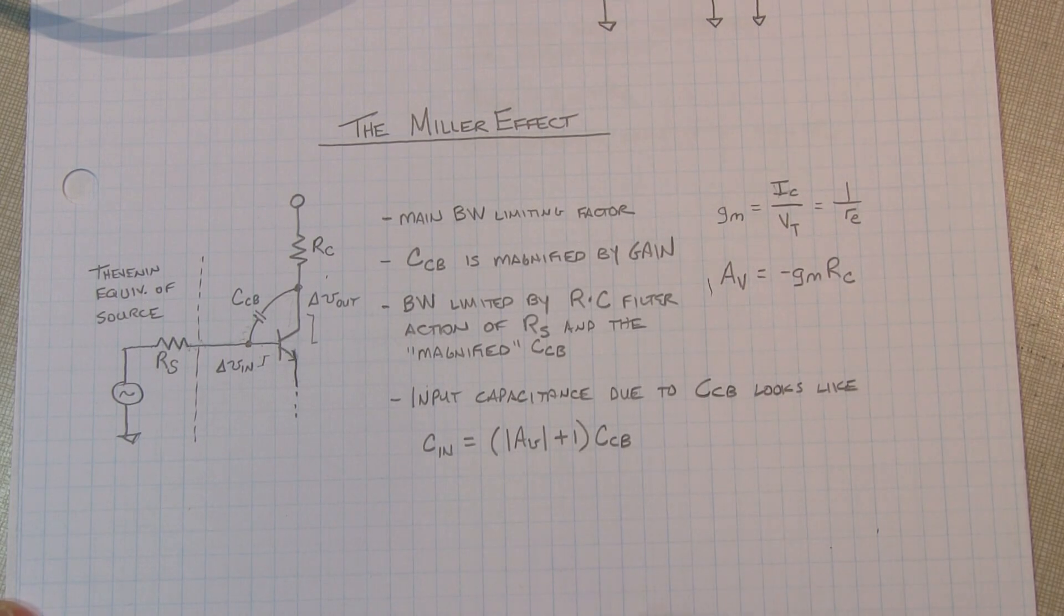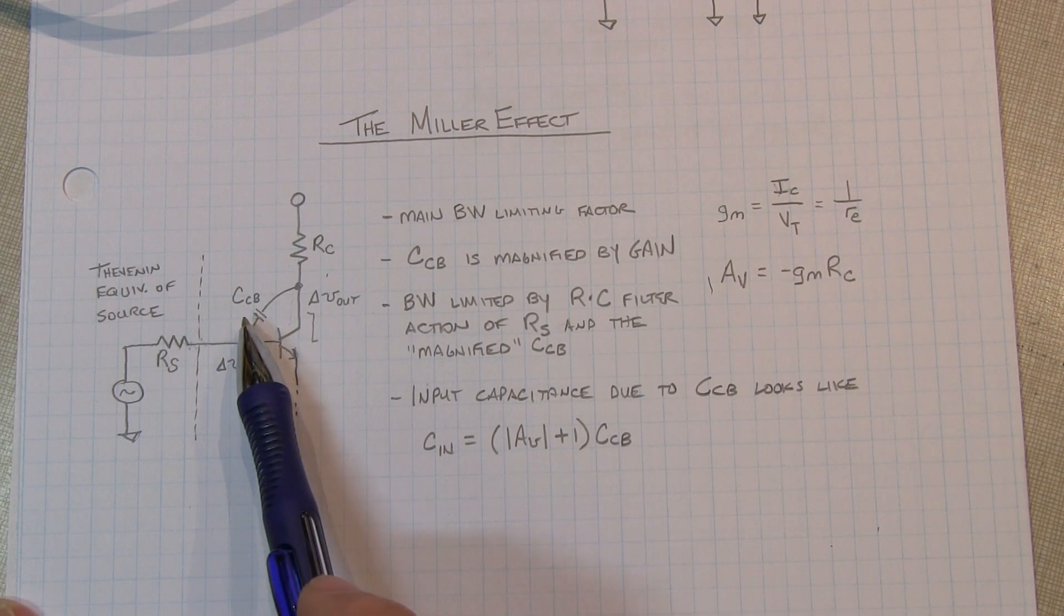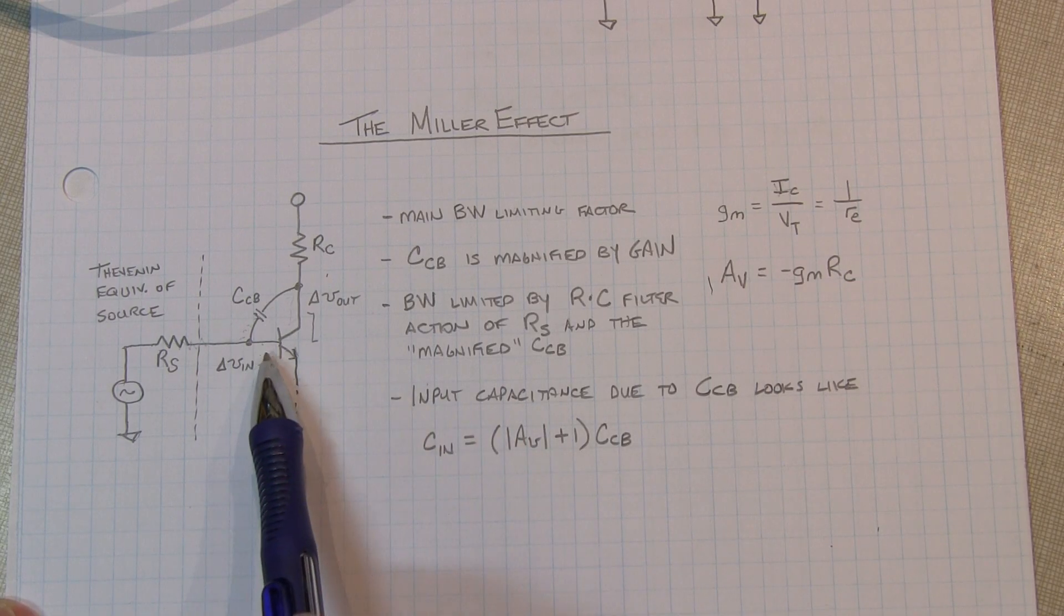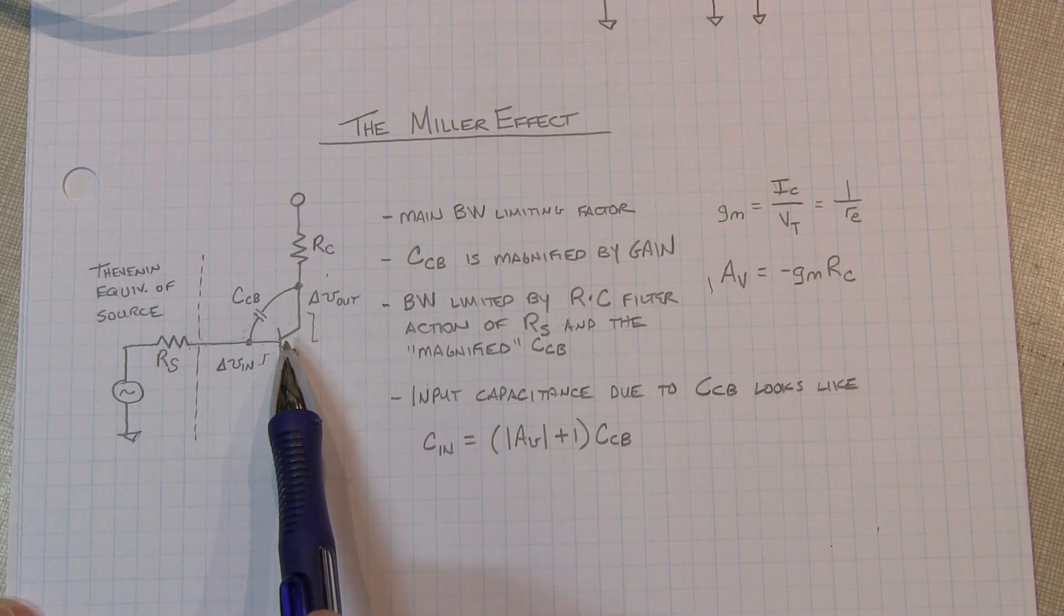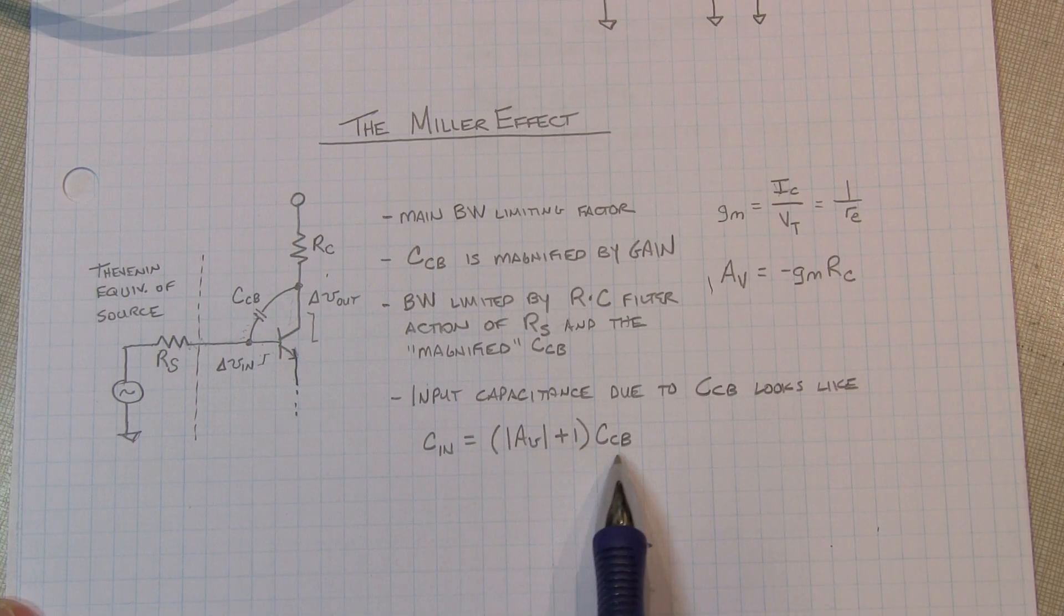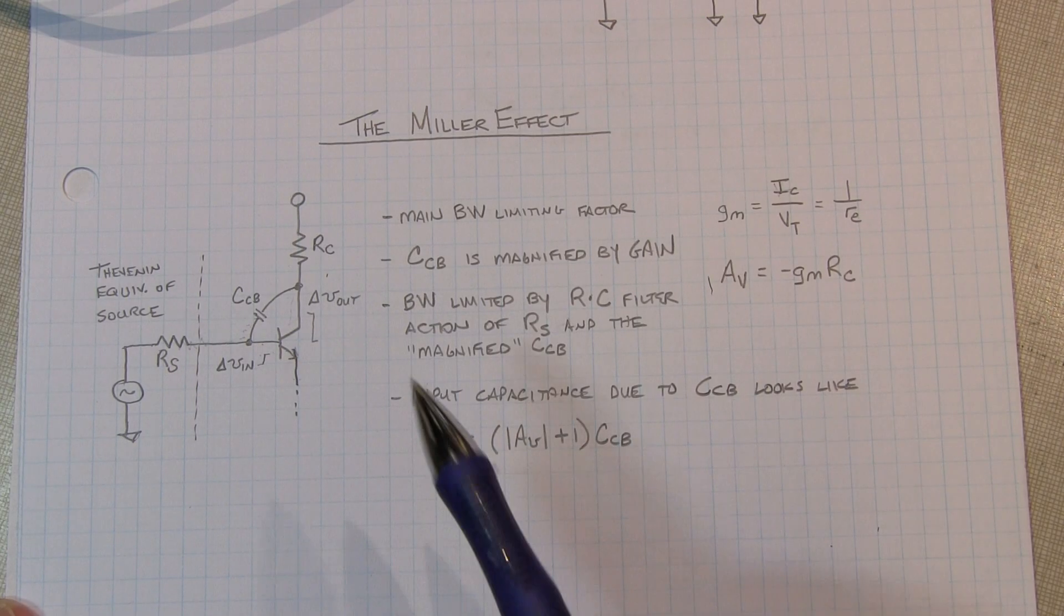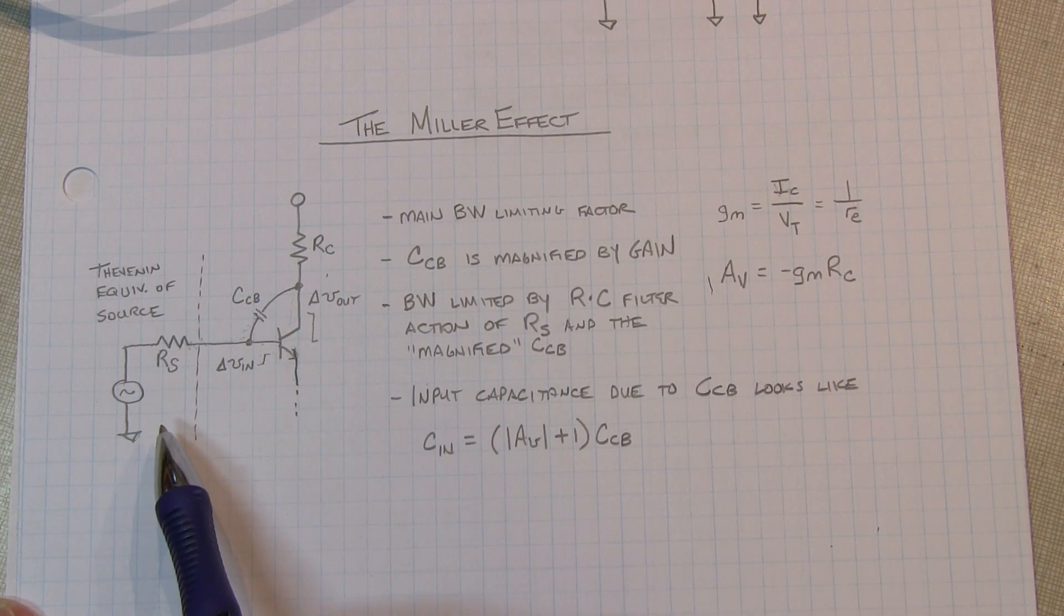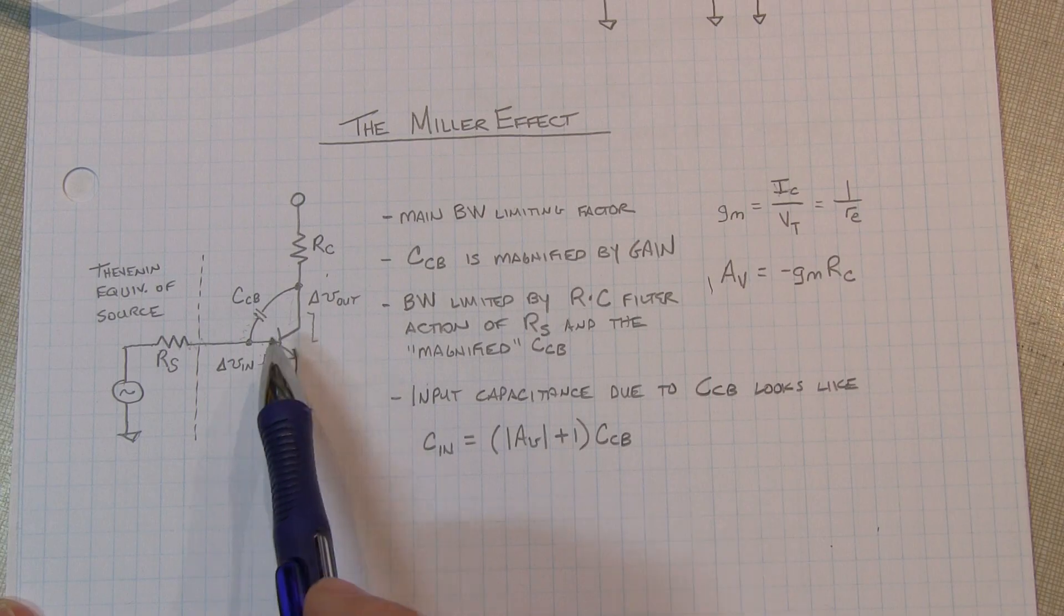To be just a little more precise about it, the amount of magnification of the collector base capacitance is really equal to the voltage gain of the transistor or the amplifier plus 1 times the collector base capacitance. Even consider the case where I have a common emitter set up for unity gain or a gain of minus 1.